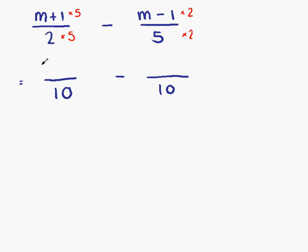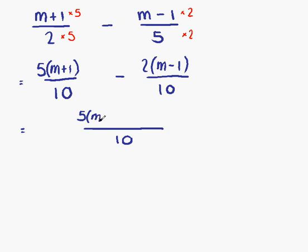On the top line, we have 5 times m plus 1, and 2 times m minus 1. We now have 2 fractions with a common denominator, so these can be written as a single fraction over 10. So, we have 5 times (m plus 1) minus 2 times (m minus 1).